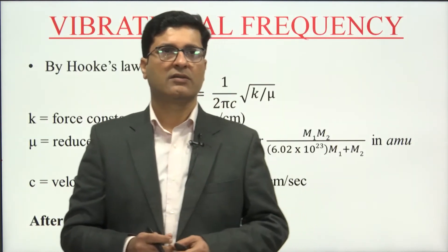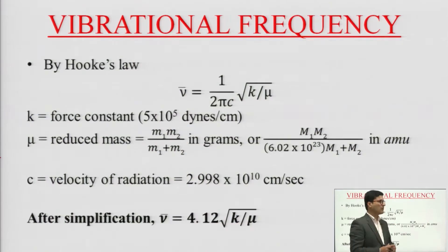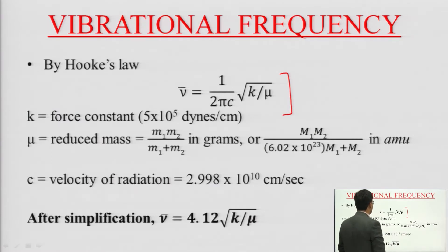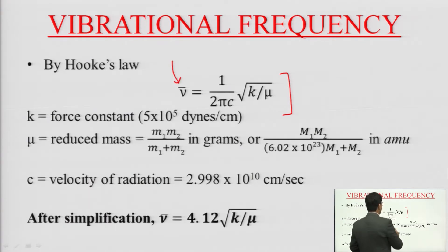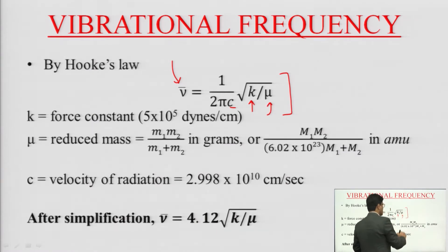The vibrational frequency can be represented by Hooke's law, given by the equation: mu-bar equals 1 over 2-pi-c times the square root of k over mu. In this equation, mu-bar indicates the vibrational frequency, c is the velocity of light (a constant), k is the force constant, and mu is the reduced mass.